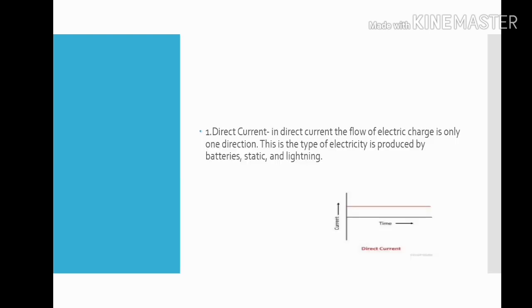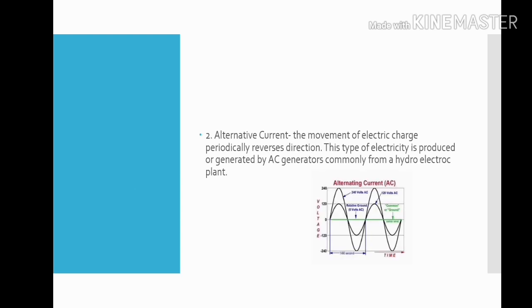Number 1, Direct Current. In direct current, the flow of electric charge is only one direction. This is the type of electricity produced by batteries, static, and lightning. Here is the picture of the direct current.